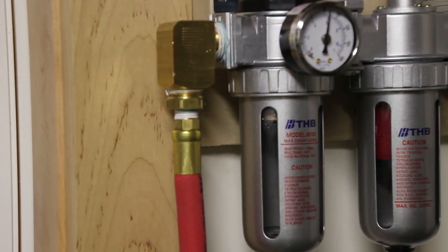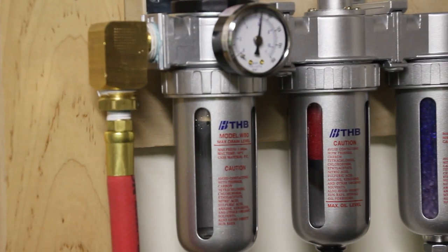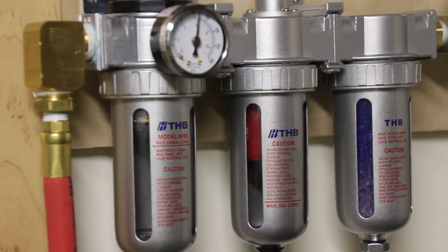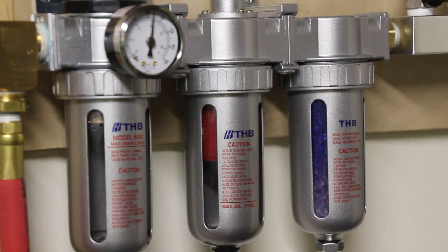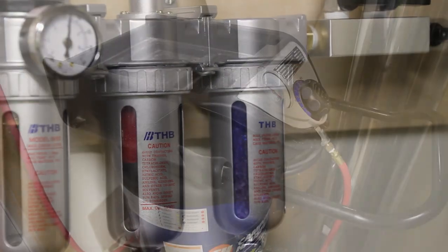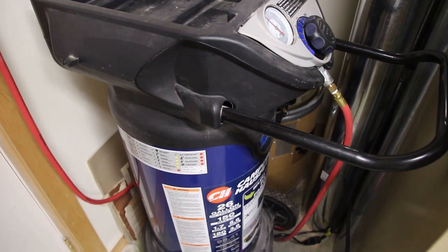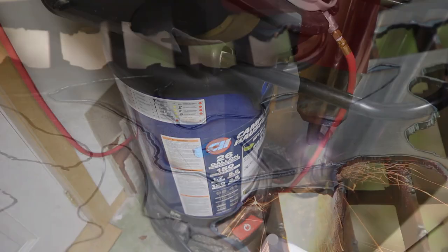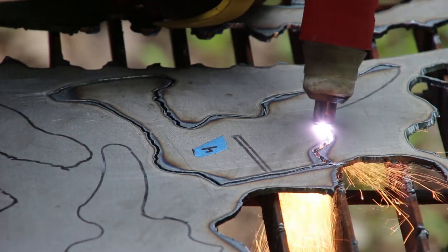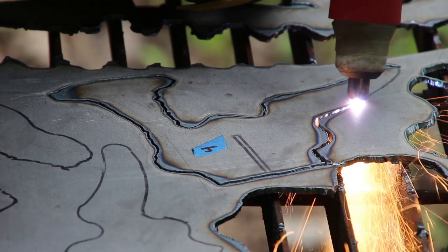It has a particulate filter, an oil and water separator filter similar to this, and then it also has a desiccant dryer that dries the air even further. It's a big compressor, and I have that because I need it for things like plasma cutting where I need a very high volume supply of very dry air.